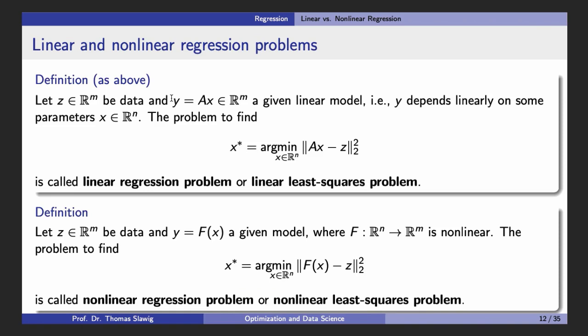In the linear case, the model is y equals A times x. In the nonlinear case, we have a general function f which is nonlinear, mapping R^n (parameter space) to R^m (model output), where R^m is the dimension of the data. We minimize the Euclidean norm squared — it is still a least squares problem and a sum of squares — but it is a nonlinear regression problem.